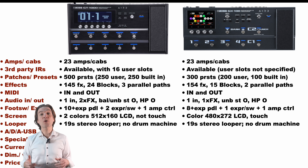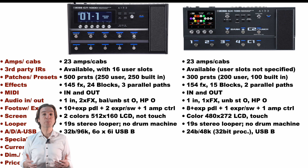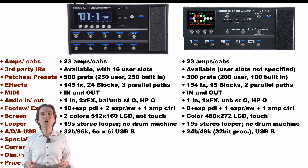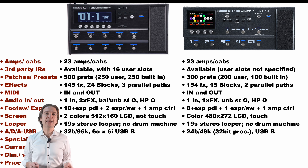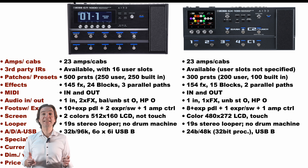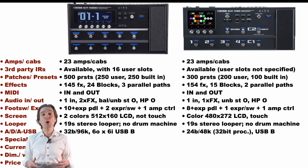As regards ADA conversion and USB capabilities, the GT1000 is better. It offers 32-bit converters at 96 kHz, where the GX100 offers 24-bit at 48 kHz with 32-bit internal processing. Furthermore, the GT1000 offers a 6-in, 6-out USB audio interface, where I was not able to find the number of audio channels available in the GX100.